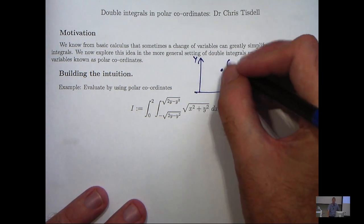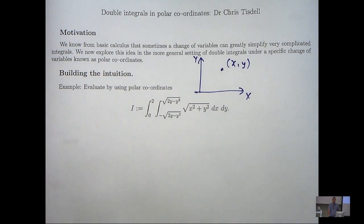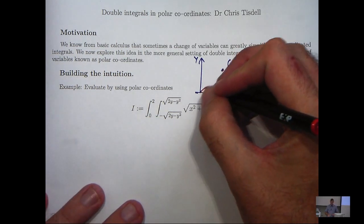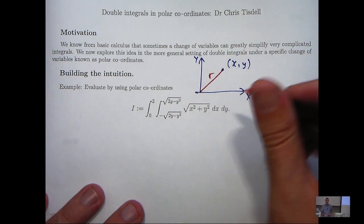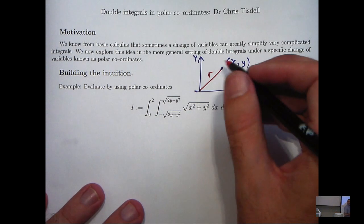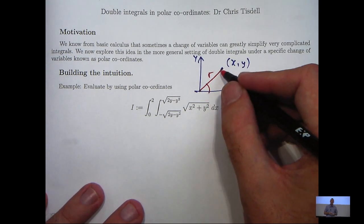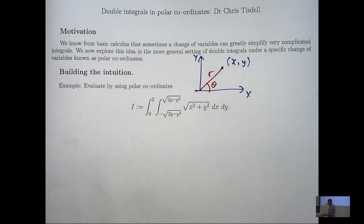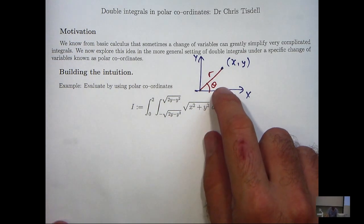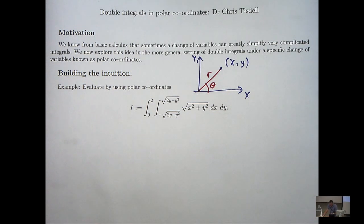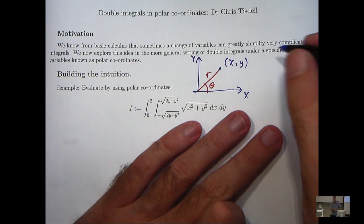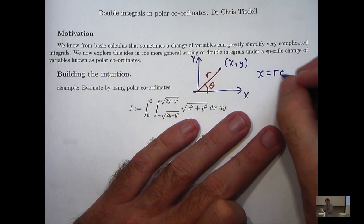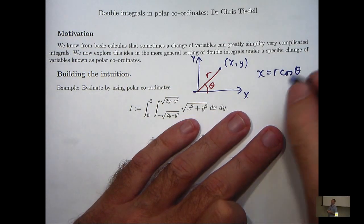So let's just refresh our memory on polar coordinates. If I'm at a point in the xy plane, then this point has a distance to the origin that I'm going to denote by r. And we can form an angle to the positive ox axis, which I'll denote by theta. Now r and theta are known as polar coordinates.